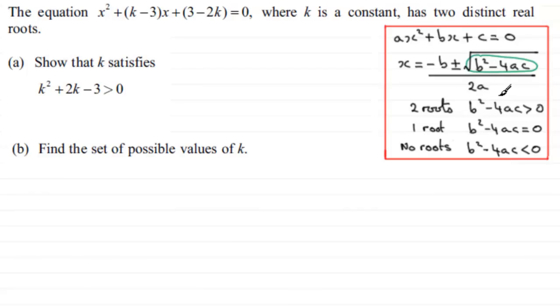Well in this problem, we're told that this equation has two distinct real roots. So that means that B squared minus 4AC must be greater than 0. So that's our starting point for this question then. We know that for two roots, B squared minus 4AC must be greater than 0. I'd encourage you to write something like that.